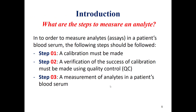So what are the steps to measure an analyte? In order to measure analytes or assays in a patient's blood serum, the following steps should be followed. Step one: a calibration must be made. Step two: a verification of the success of the calibration must be made using a quality control. And finally, as a third step, the measurement will be done.